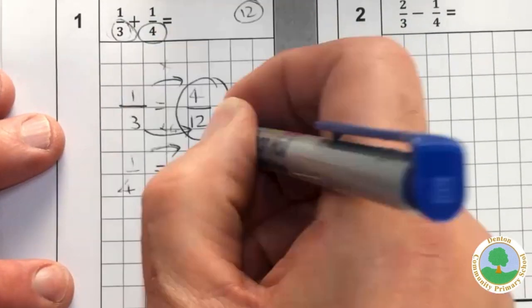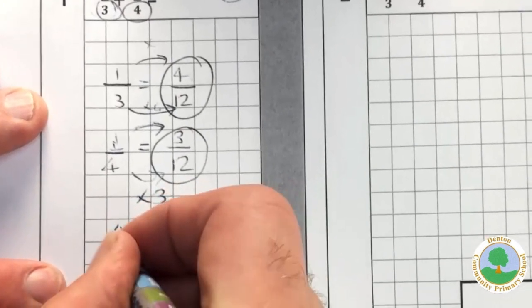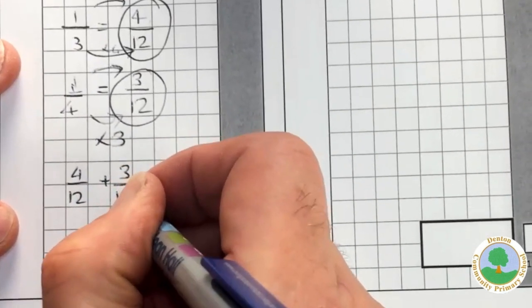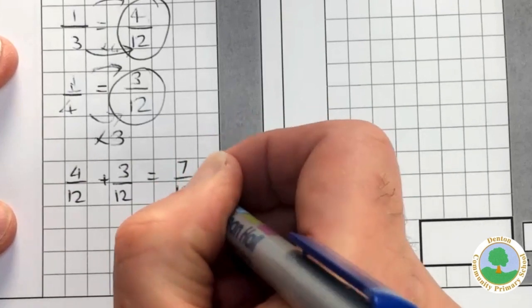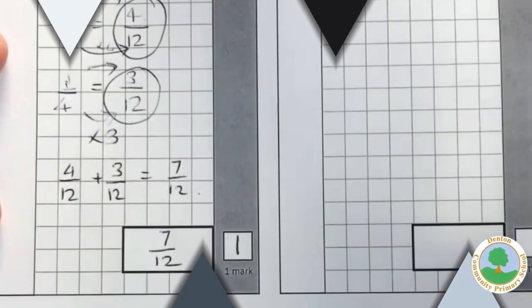And so we've got, instead of a third, we've got four twelfths. Instead of a quarter, we've got three twelfths. Four of those things and three of those things is seven of those things. It doesn't simplify, so we can give ourselves the mark.